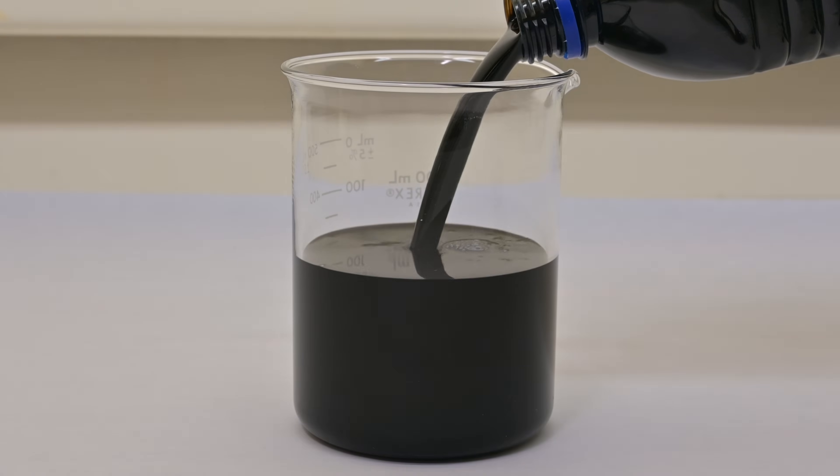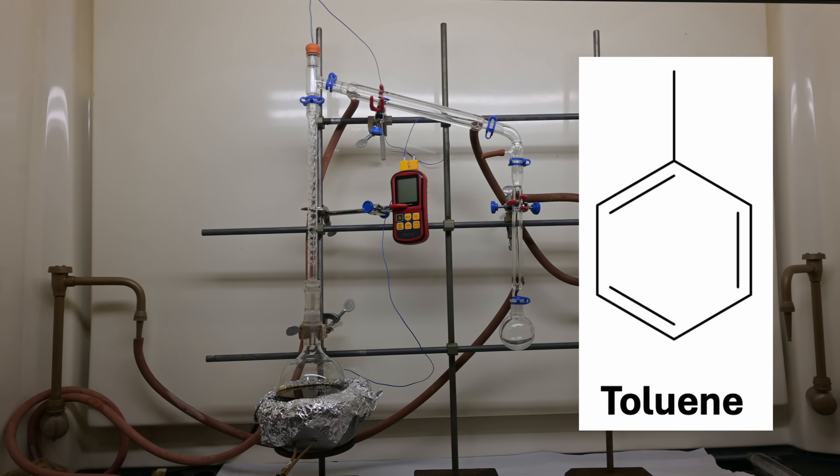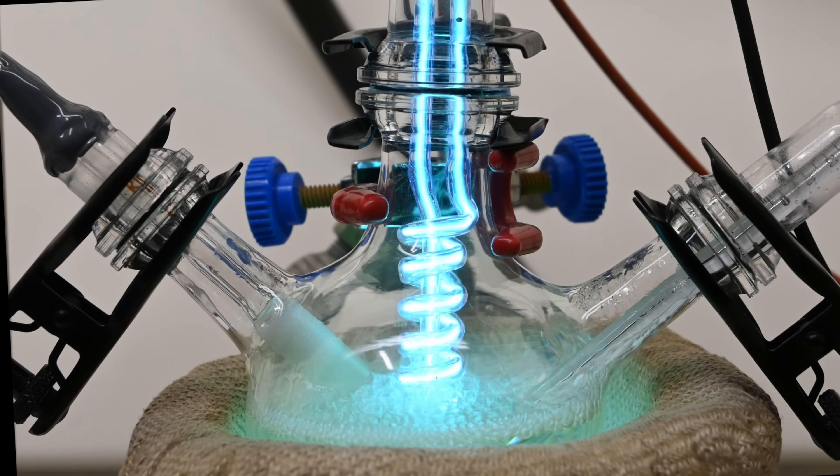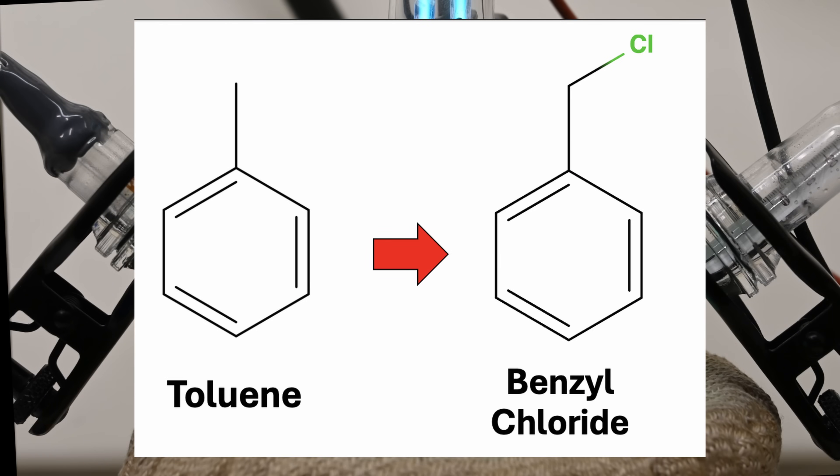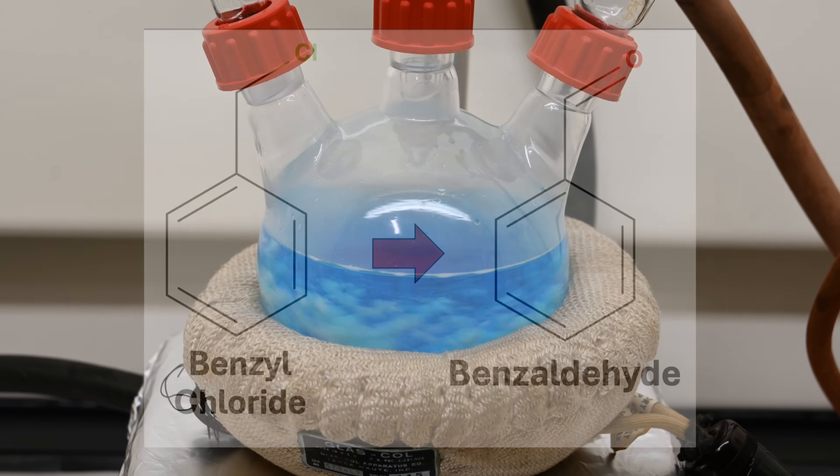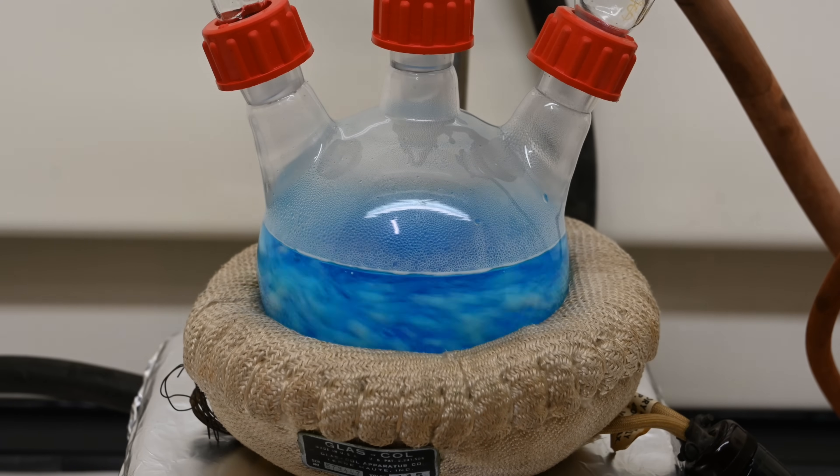In a previous video, we began at the source, distilling crude oil to isolate a key compound called ethylene. From there, we used radical chlorination, a powerful and exciting chemical reaction, to convert that simple molecule into benzoyl chloride. Benzoyl chloride then became our building block for benzaldehyde, a versatile and valuable chemical that we will use as our starting point today.